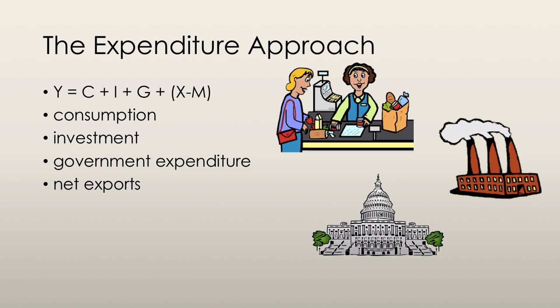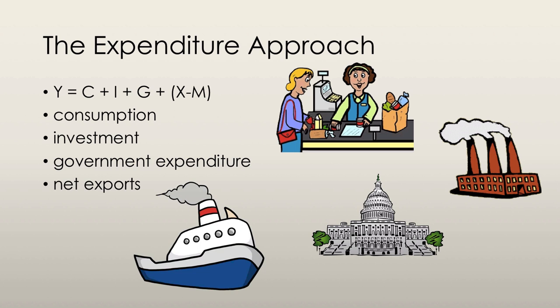We also have government spending, which is the expenditure by all levels of government on goods and services. But this does not include transfer payments because they're not actually expenditure on goods and services. We also have net exports, which is simply the value of exports out of the country subtract the value of imports into the country.